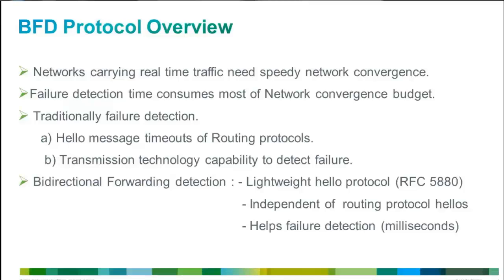With networks carrying more and more real-time traffic, speedy network convergence is a must. For speedy network convergence, failure detection between adjacent routers must happen as quickly as possible. In typical network designs, the detection of network failure consumes most of the convergence time budget. So faster the failure detection, faster is your network convergence. By failure detection we mean detection of transmission link failure or hardware failures, based on which routing protocols react quickly to use alternate paths.